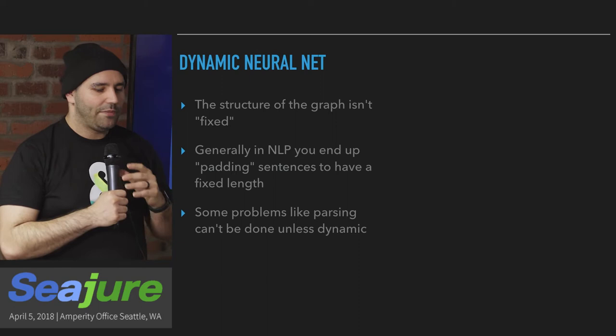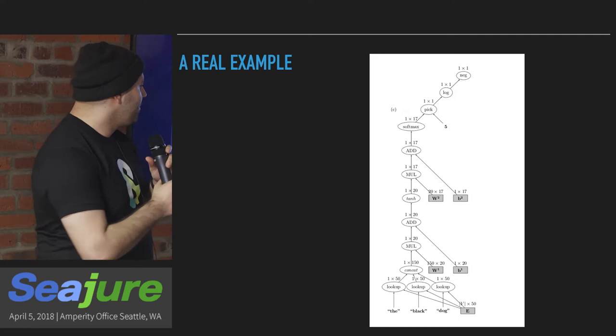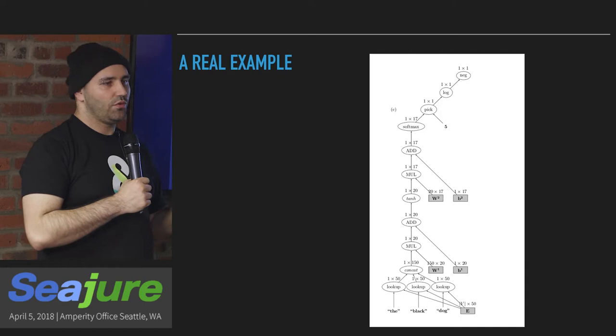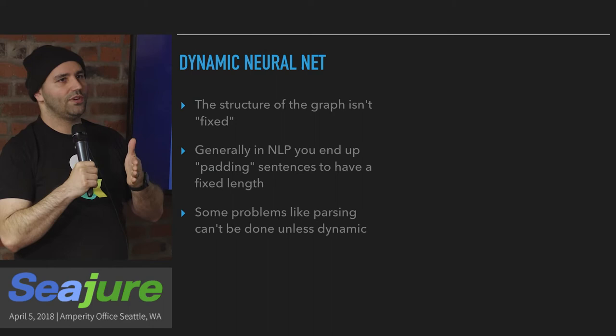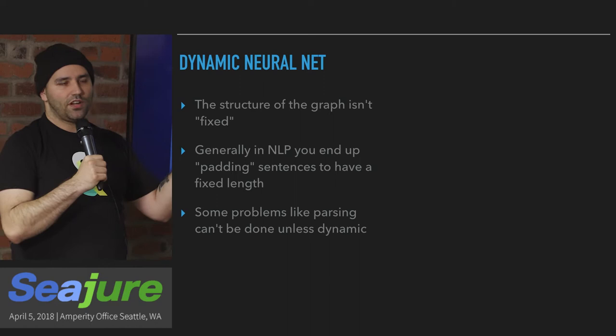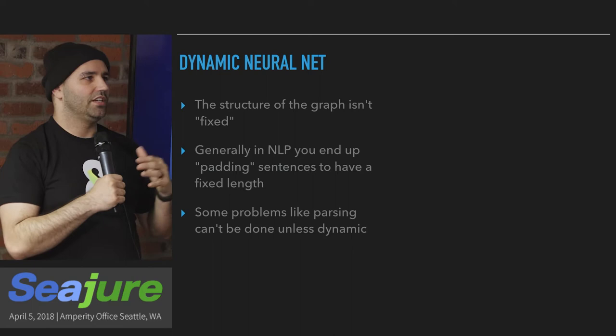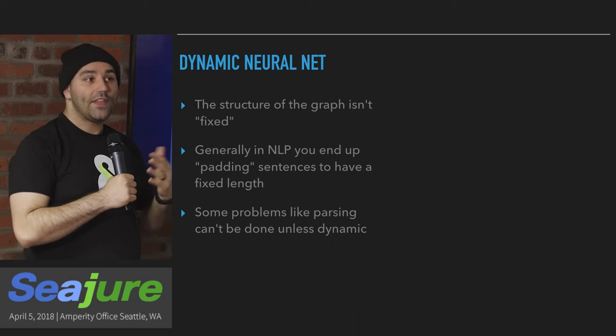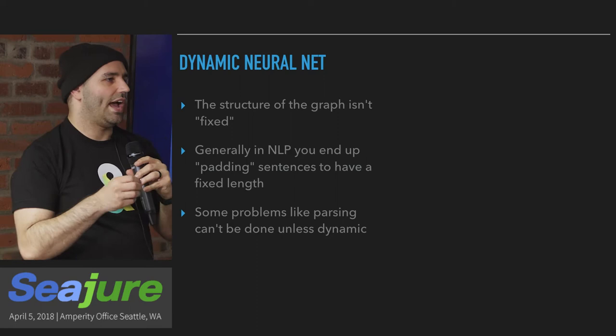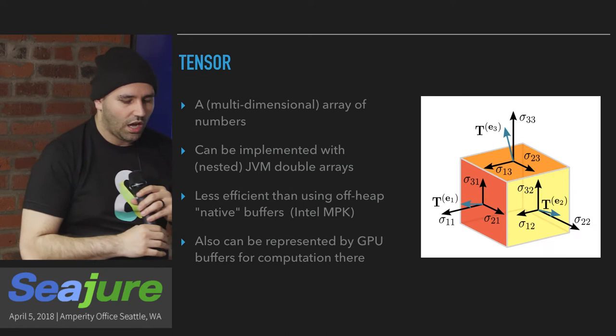A dynamic neural net means that the graph structure isn't fixed ahead of time. Sometimes you want to classify four words instead of three words — sometimes you have more or fewer words to deal with. TensorFlow in its most normal state requires you to fix the graph, so you basically train everything against a fixed graph. What happens in practice for NLP with TensorFlow is you end up padding with zeros — if you have a longer or shorter sentence. The reason it does that is because all the Python is constructing the graph, then it's immediately C code by the time you execute anything. But there are problems you can't do this way, where you need to dynamically change the graph structure depending on your input.